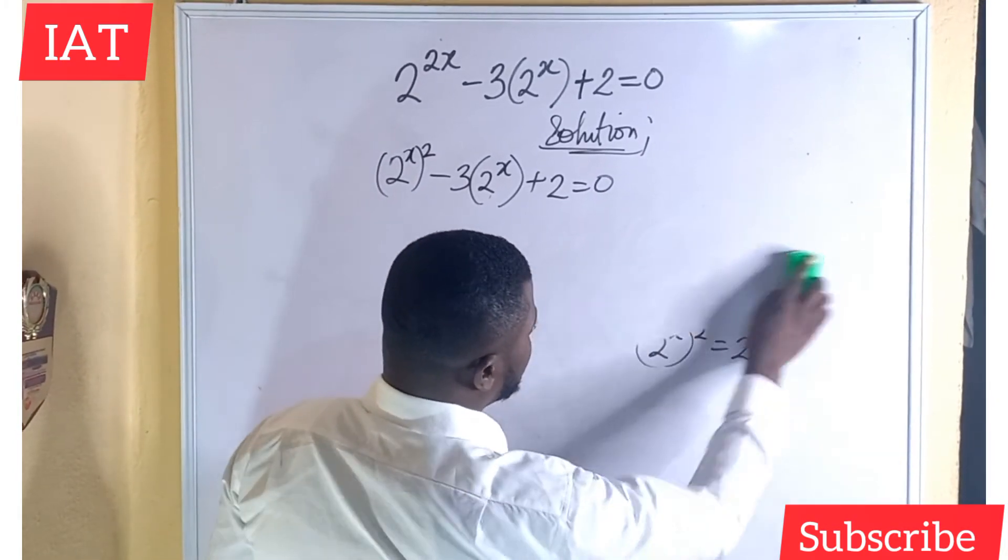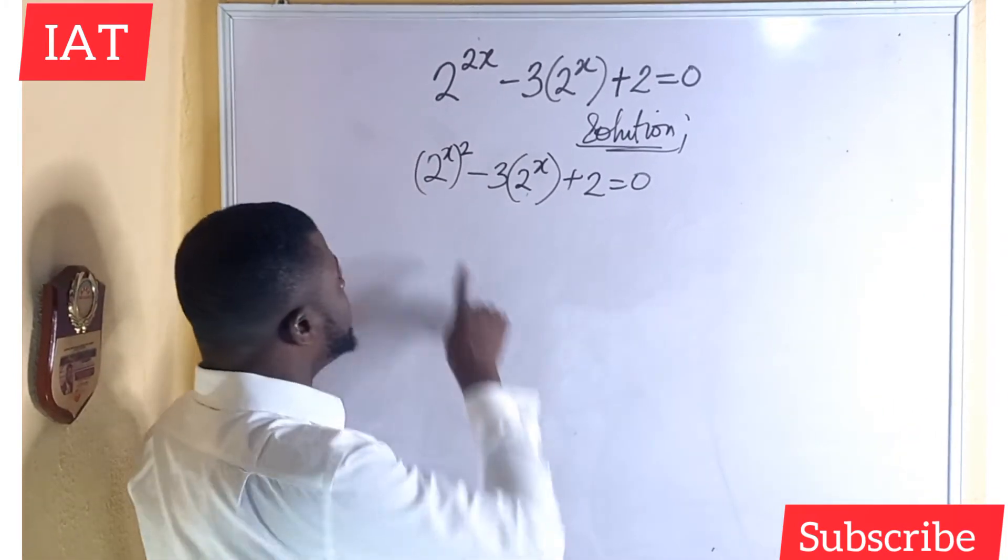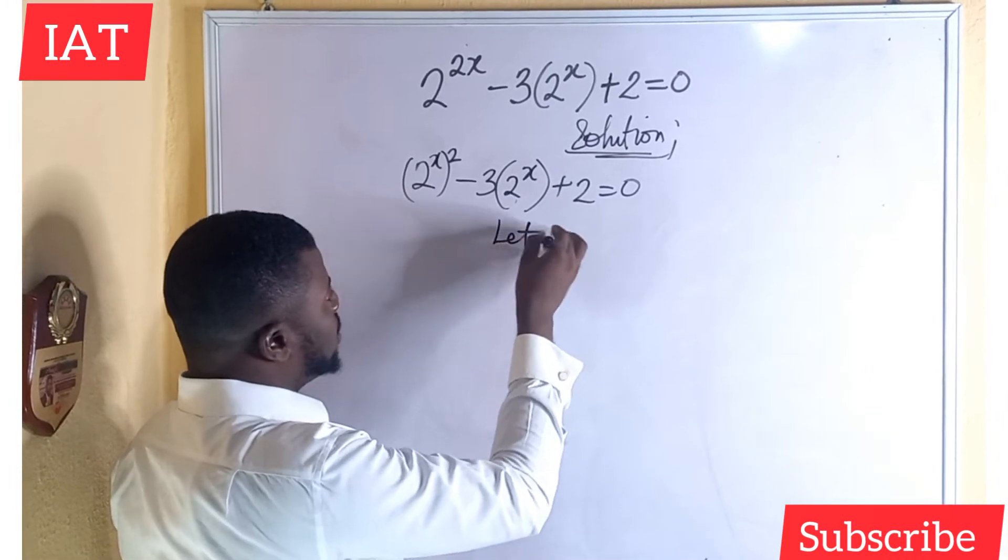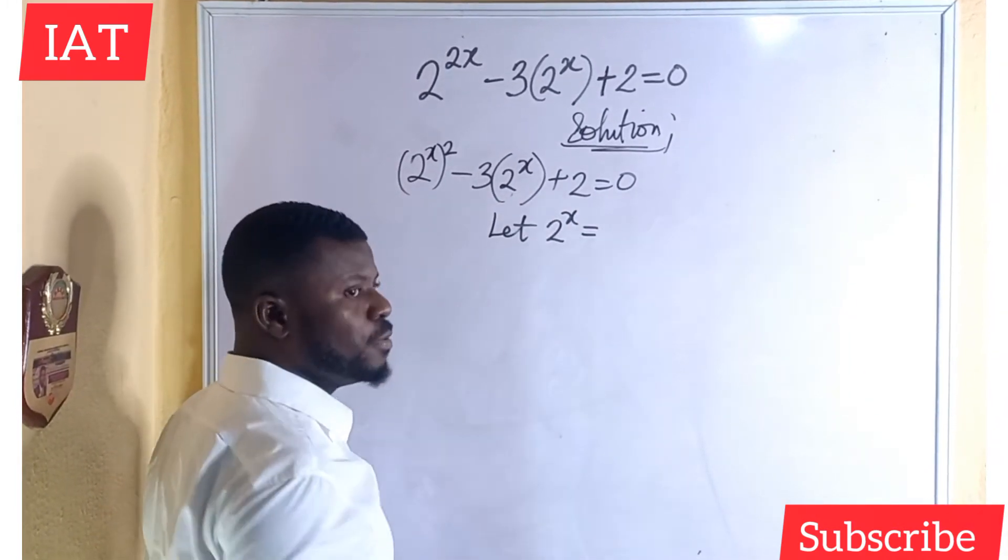So let's let go of this. I'll have enough space to finish up this work. So at this point, we can make some sort of assumption. Now what is that assumption? We're going to make this 2 to the power of x to be represented as any variable of your choice.